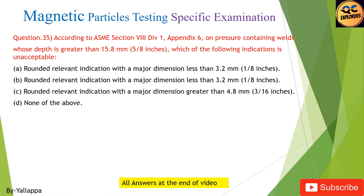Question 35: According to ASME Section 8 Div. 1, Appendix 6, on pressure-containing welds whose depth is greater than 15.8 mm, which of the following indications is unacceptable? (A) Rounded relevant indication with a major dimension less than 3.2 mm; (B) Rounded relevant indication with a major dimension less than 3.2 mm; (C) Rounded relevant indication with a major dimension greater than 4.8 mm; (D) None of the above.